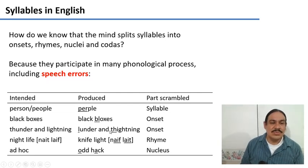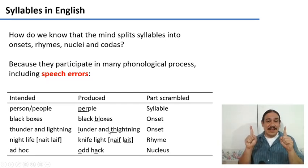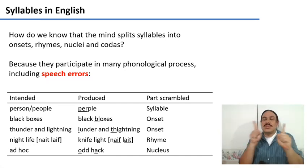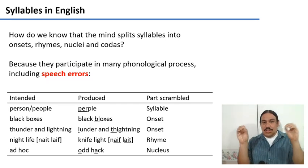We also see this when two segments switch places, like in thunder and lightning. So because they switched places, it must mean that onsets exist because they are units that can be switched around.